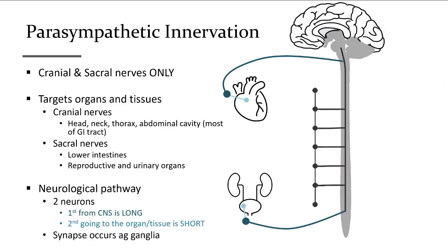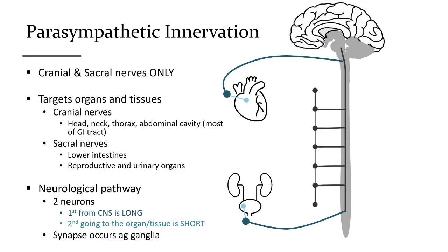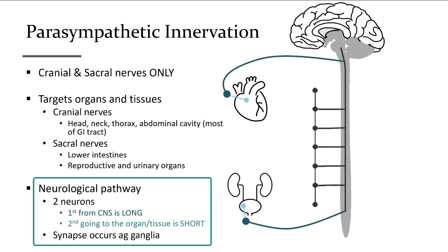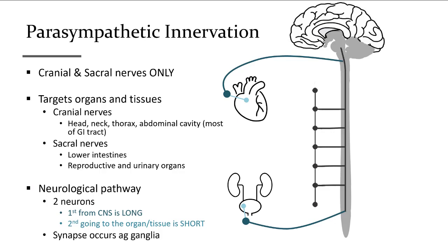The parasympathetic nervous system utilizes only specific cranial nerves and sacral nerves. It will target our tissues and has a two-step pathway which we'll discuss shortly. A hallmark of the parasympathetic system is that the first of the two neurons — going to the heart, or in this case shown in the bladder — is a very long first neuron, and then the second neuron is a very short one that's actually within the tissue surrounding that organ.